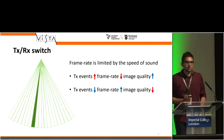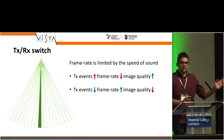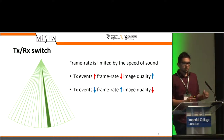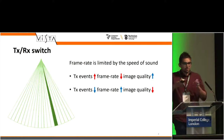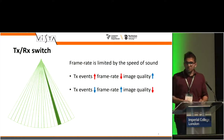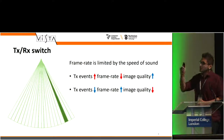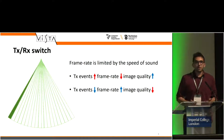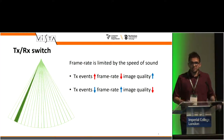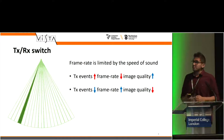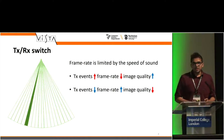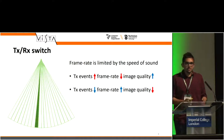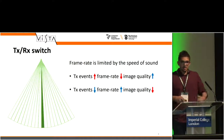Essentially you transmit one wave in one direction, then receive the response you get from it, and then you raster scan it throughout the sector. Each one of these lines is limited by the speed of sound, because it can't travel faster than sound. Moreover, as the number of transmit events increases, the frame rate decreases linearly.